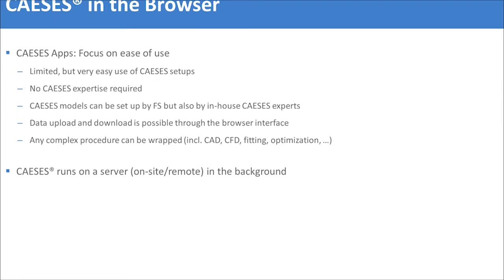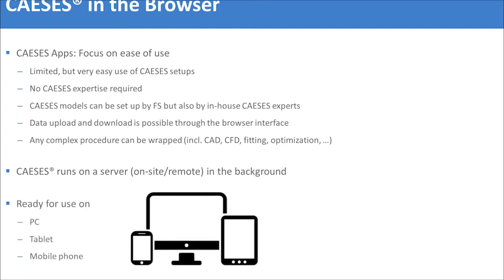CASES also features a web GUI. CASES can be used in the browser through customized project setups that work like apps. The idea is a very limited but easy-to-use interface that requires no CASES expertise. These models can be set up by Friendship Systems or by in-house experts. You can wrap procedures like uploading data, downloading data, starting CFD computations, and starting optimization processes. In the background, CASES runs on a server — either on-site or remotely — and you connect to that CASES instance through your browser. It's a responsive interface usable on PC, tablet, or mobile phone.